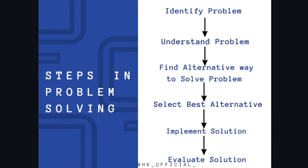Now, these are the steps in problem solving. Identifying the problem is the initiation of problem solving, so we start with identifying the problem. Then we understand the problem. Then we have to find alternative ways to solve the problem. Next, select the best alternative. Then implement the solution. Finally, evaluate the solution. These steps come in exams for 6 marks, where we have to write these steps and also explain each point. So concentrate on this topic.